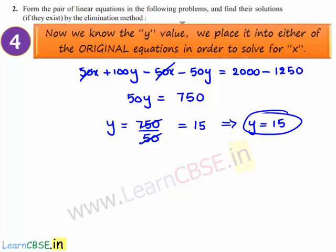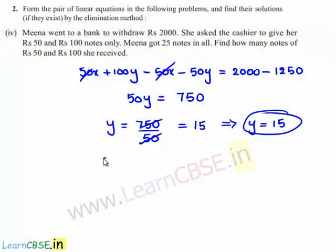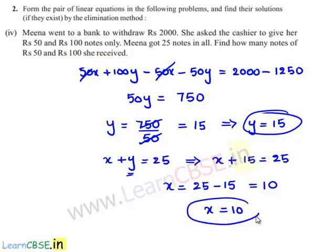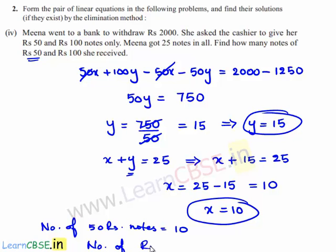The value of y is 15. To obtain the value of x, substitute y into equation 1: x plus 15 is equal to 25, so x is equal to 25 minus 15, which is 10. Therefore, the number of Rs. 50 notes is 10 and the number of Rs. 100 notes is 15.